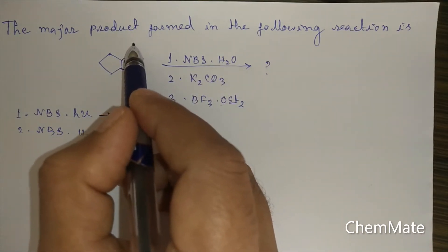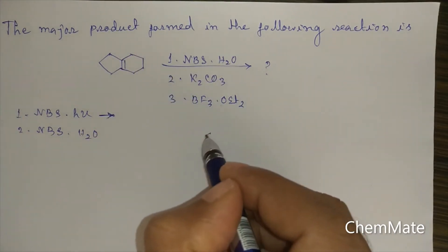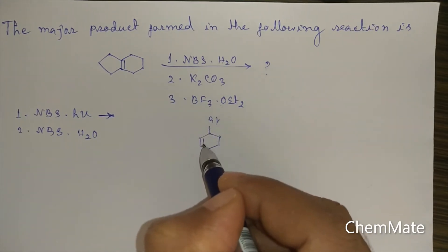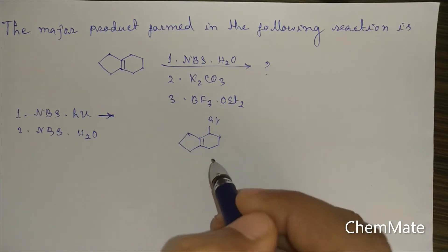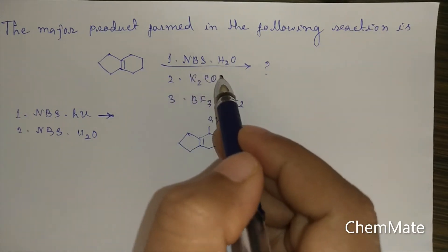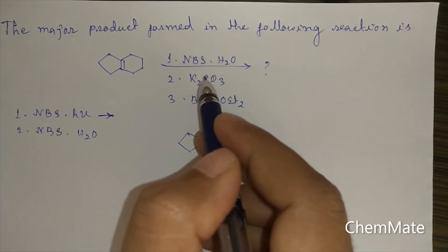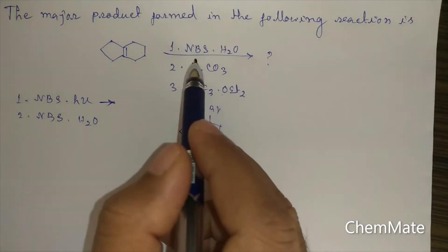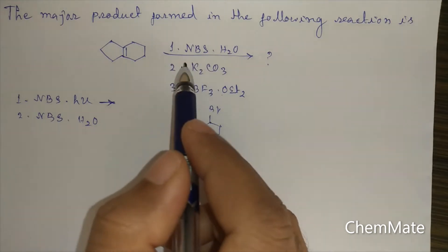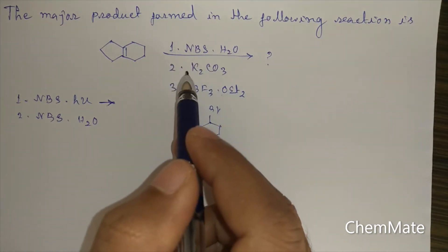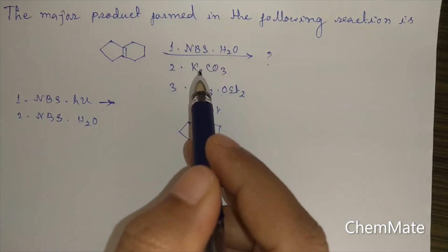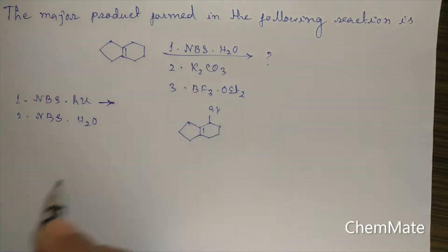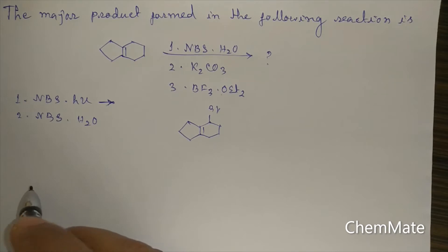If it is NBS in photochemical conditions, bromine would go at the allylic position. But since it is NBS with H2O, the reaction proceeds with a different mechanism: first a bromonium ion intermediate will be formed, and after that H2O will open up the ring and a halohydrin will be formed. We will now discuss this mechanism.